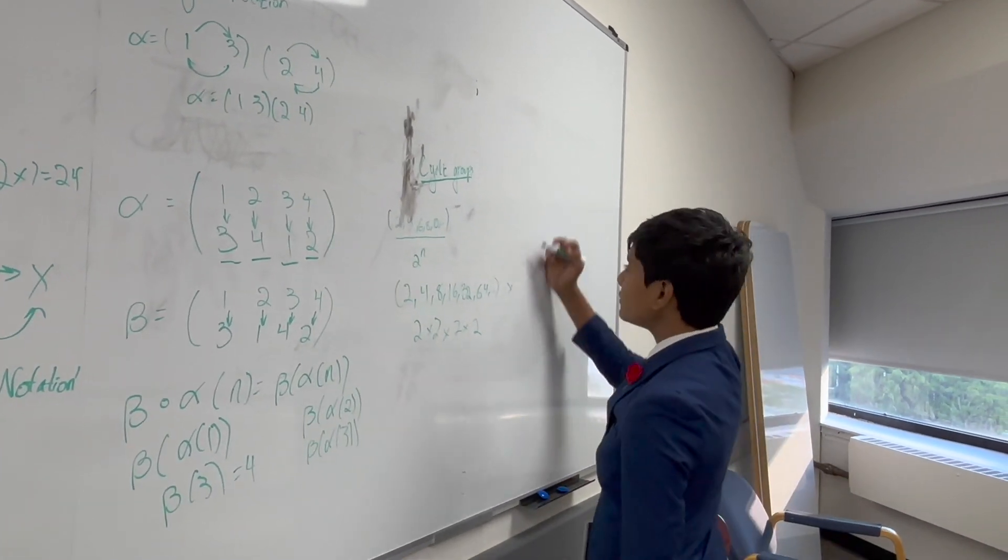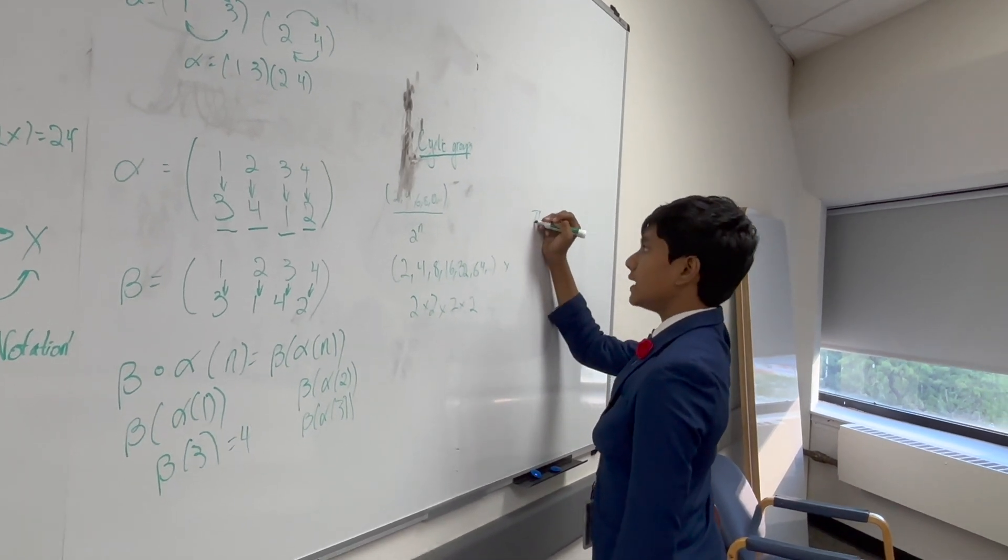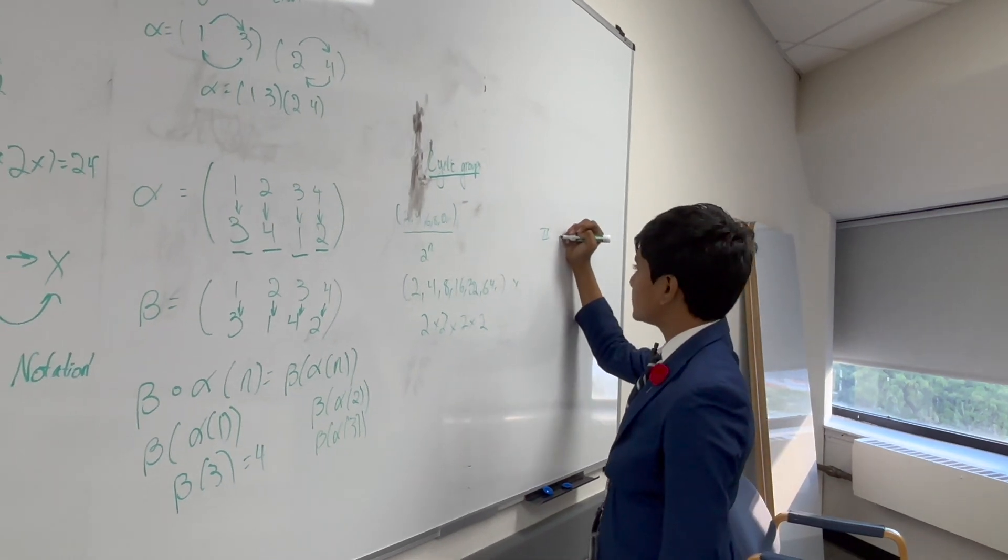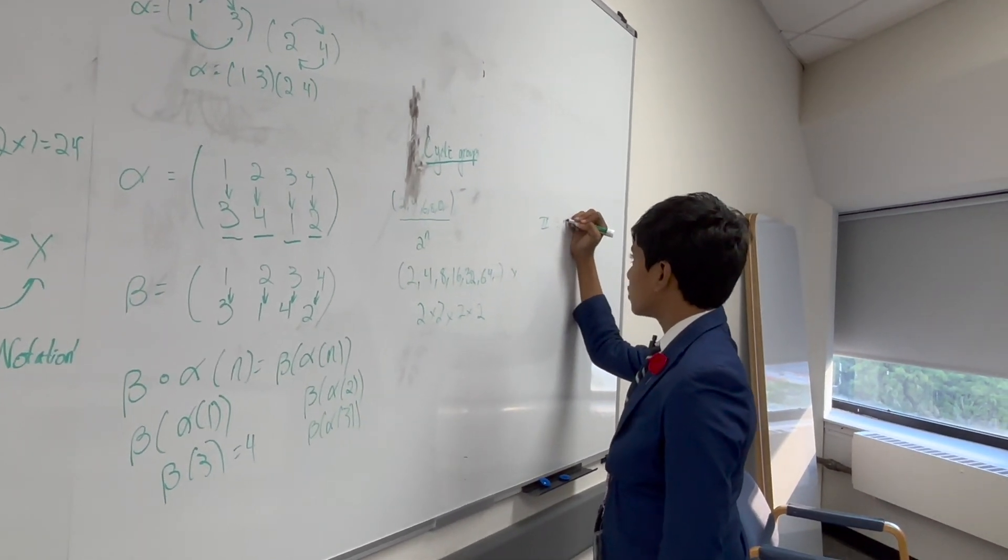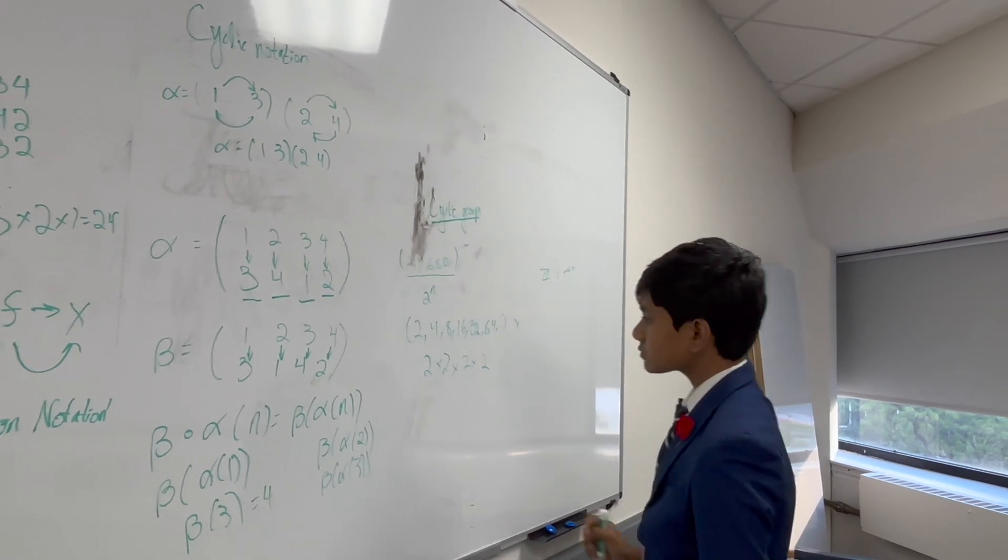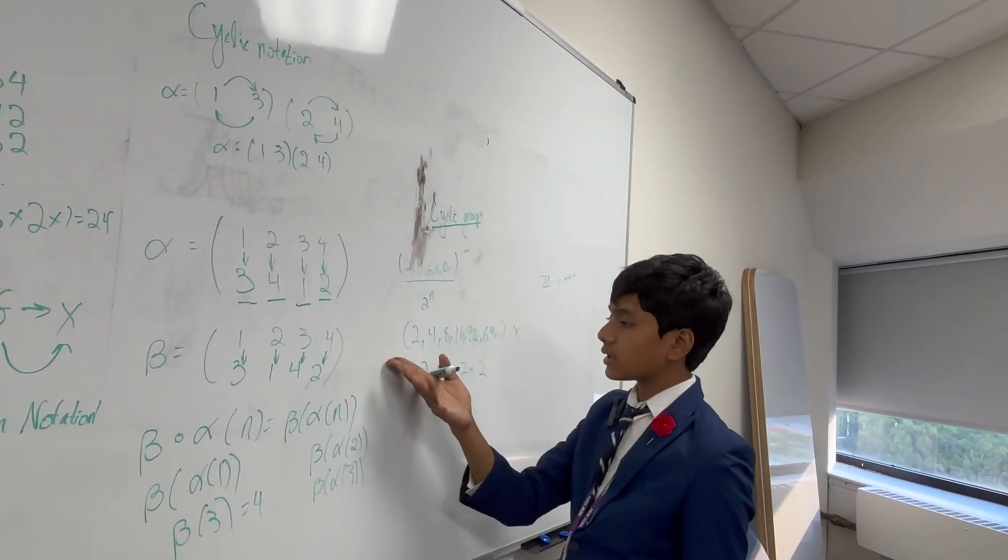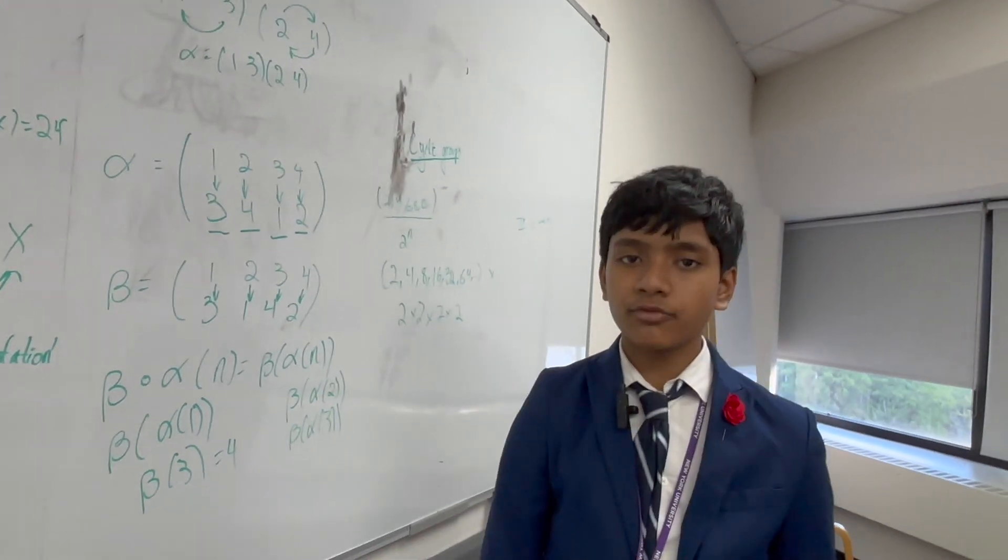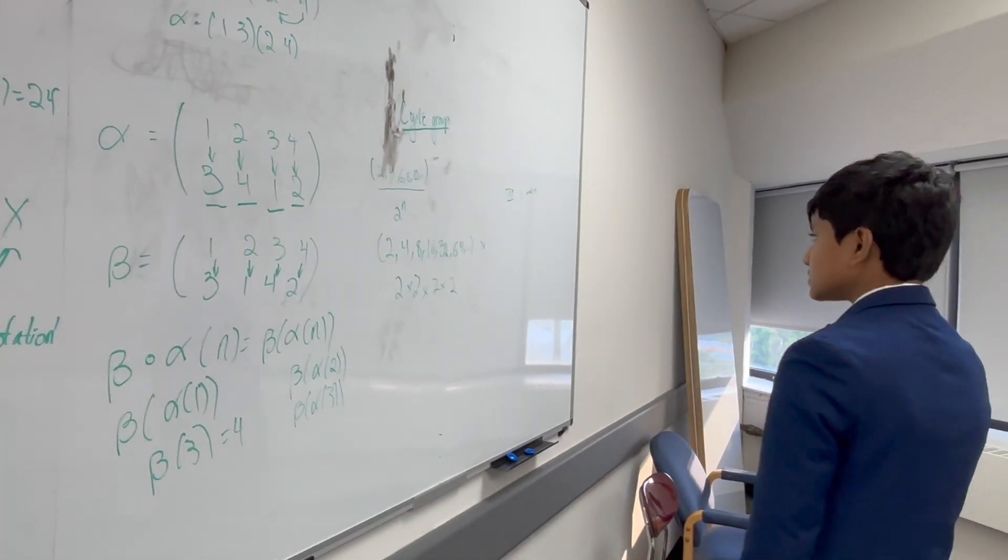Now, most infinite groups either take the form of Z, or some subset of Z, or some modulo of Z, or, when it comes to multiplication, this exponential sort of form. So, that's a cyclic group.